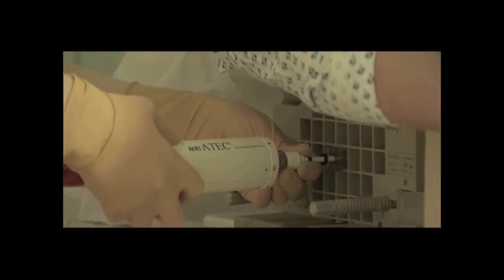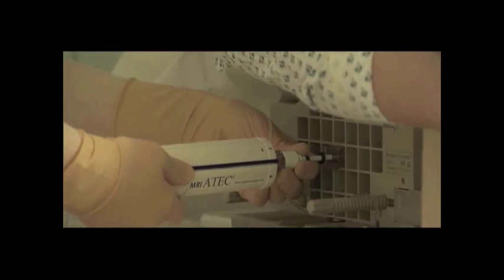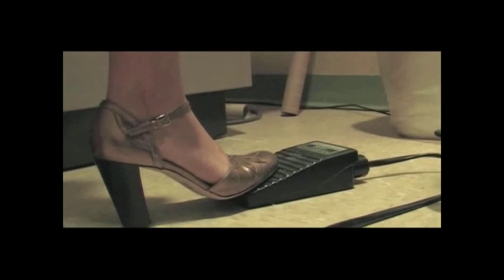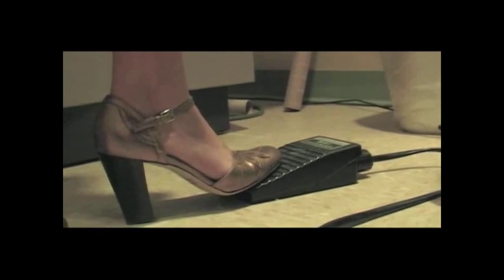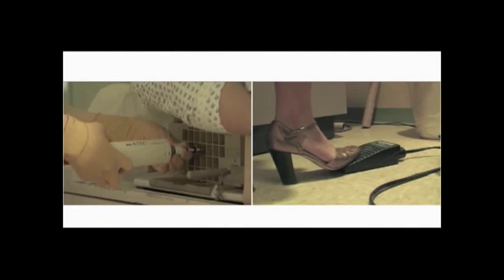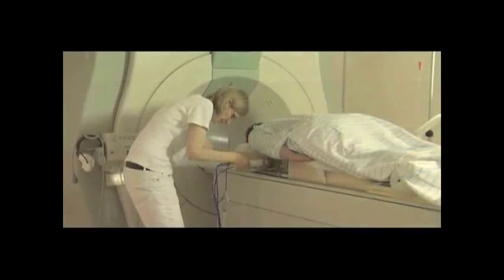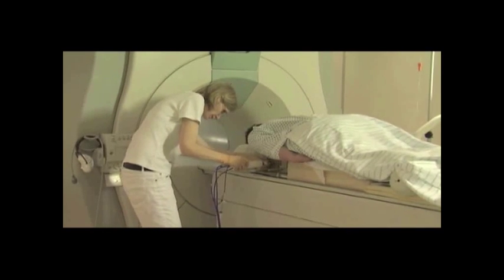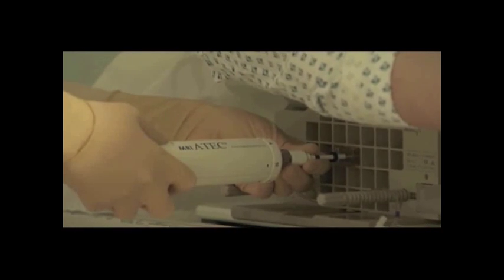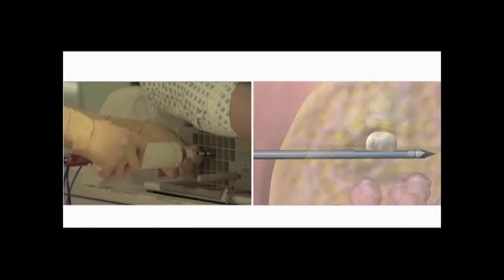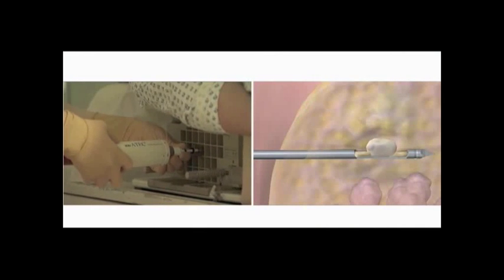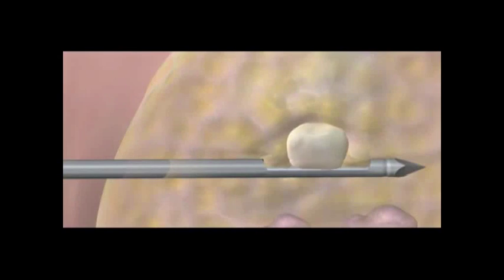Core samples can be taken at any clock position depending on the location of the area of interest. Depress the foot switch to activate the biopsy system and continue to hold the foot switch down throughout the tissue acquisition sequence. Tissue acquisition occurs every 4.5 seconds. A beep indicates the end of one cutting cycle. Manual rotation of the handpiece occurs just after the beep during the resting phase of the biopsy cycle. The ATEC handpiece acquires tissue samples until the foot switch is released when all necessary core samples have been retrieved.